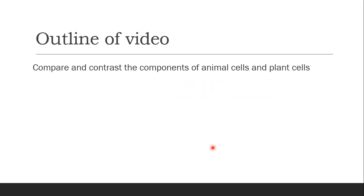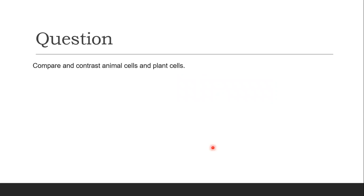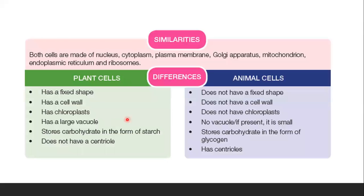For this video, what you need to know is how to compare and contrast the components of animal cells and plant cells — a question you will always find in examinations. A little tip: when you see the words 'compare and contrast,' you can always draw a table to state the common features, the similarities, and also the differences between animal cells and plant cells.